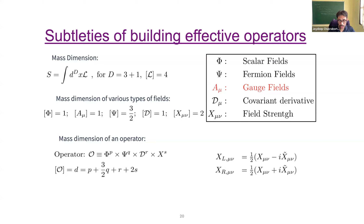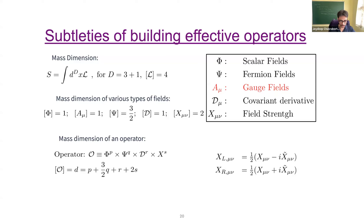We will use covariant derivatives rather than normal derivatives so that gauge invariance is automatically ensured. The operators we write will contain scalar fields, fermion fields, covariant derivatives D, and field strength tensors X. An operator O can have p copies of φ, q copies of ψ, r copies of D, and s copies of X. By construction, q must always be an even integer since fermion fields cannot appear alone.